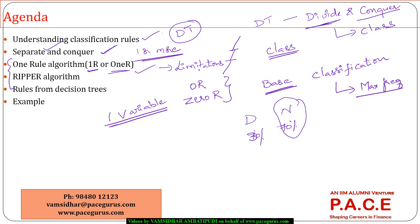An improvised version of the One Rule algorithm is the RIPPER algorithm. We'll spend time understanding RIPPER. These two are important implementations of rule-based algorithms. There is also a way to generate rules from decision trees themselves, and we'll look at the advantages and disadvantages of those rules before executing the process on a dataset.